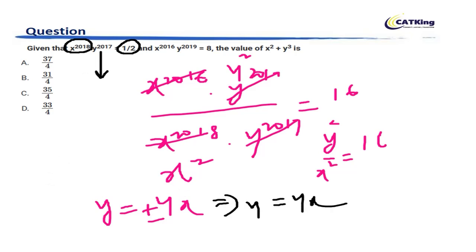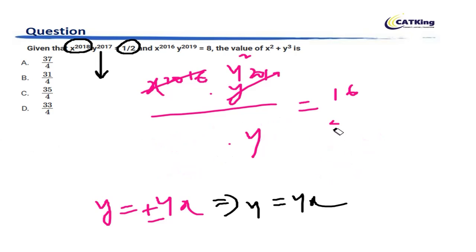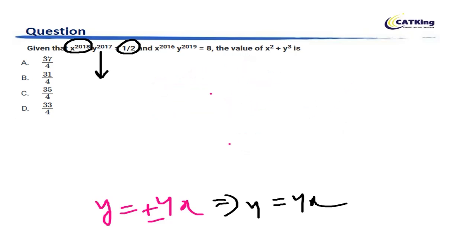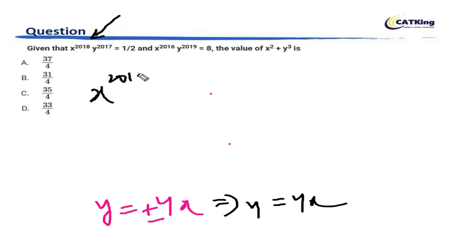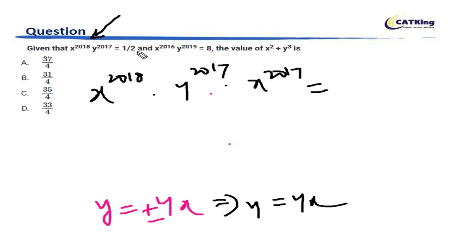Hence we take Y as plus 4X. Now that Y equals 4X is known to us, let's pick one of the equations and substitute. So X to the power 2018 into Y — substituting Y equals 4X — gives 4 to the power 2017 into X to the power 2017.